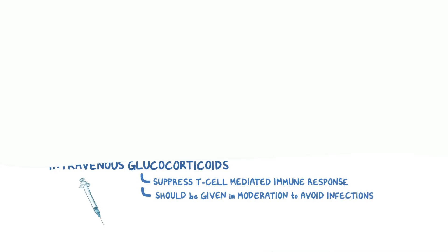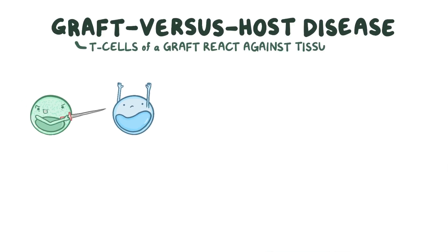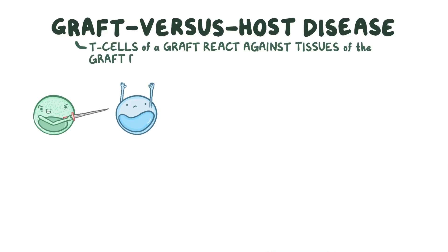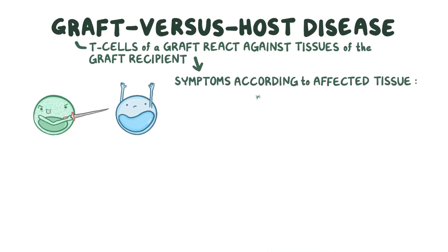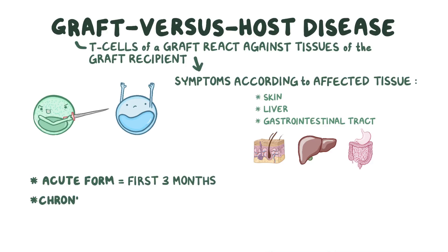As a quick recap, graft-versus-host disease occurs when T-cells of a graft react against the tissues of the graft recipient, causing a variety of symptoms according to the affected tissue, which most commonly is the skin, the liver, and the gastrointestinal tract. There's an acute form, which happens in the first three months, and a chronic form, which happens later than three months after the transplantation.